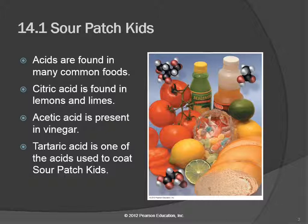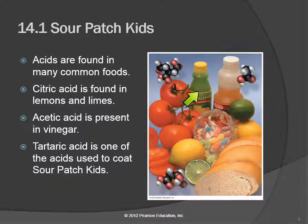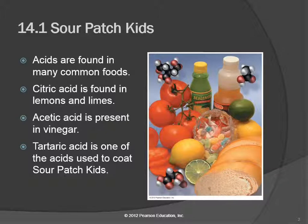Acids are very common in foods. This picture shows a whole bunch of different acids — tomatoes, lemon juice, vinegar, sourdough bread. So things like citric acid, acetic acid, tartaric acid. These are all naturally occurring acids in foods, in things we eat.